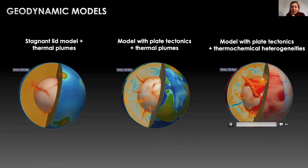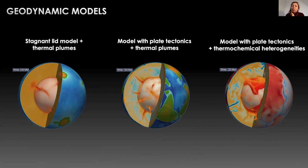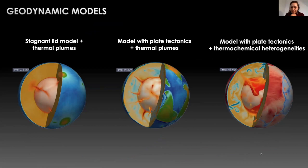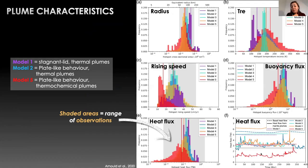And this last model with plate tectonics and thermochemical plumes. As you can see in red at the base of the mantle here we have the thermochemical piles that are stemmed by plumes.